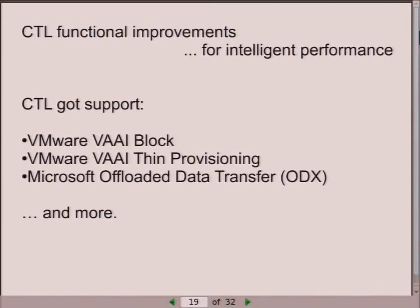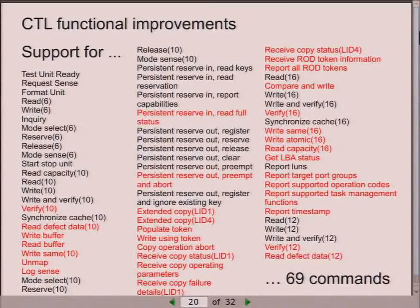To summarize, CTL now supports three groups of primitives: VMware VAAI Block, VMware VAAI vStorage, and Microsoft Offloaded Data Transfers. But actually we support more. Here is a list of commands supported by CTL now; the red commands are the ones added during the last couple of years, so we've effectively doubled the set of supported commands, and it's now not easy to find something in the SCSI specification that CTL does not support.